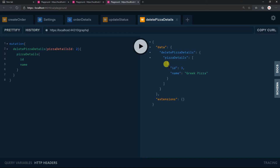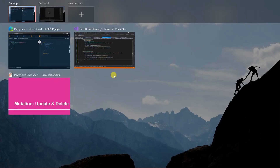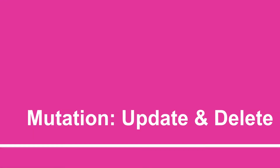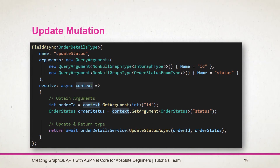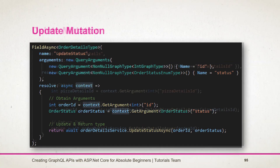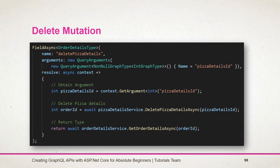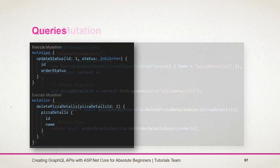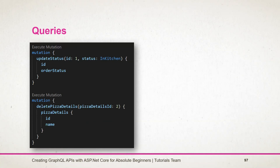Let's see what we have learned in this session. Here is a mutation for updating data in which we obtained two arguments and called the service. Here is a mutation for deleting data, and here are the GraphQL queries we used for this demo. Stay tuned for the next session.